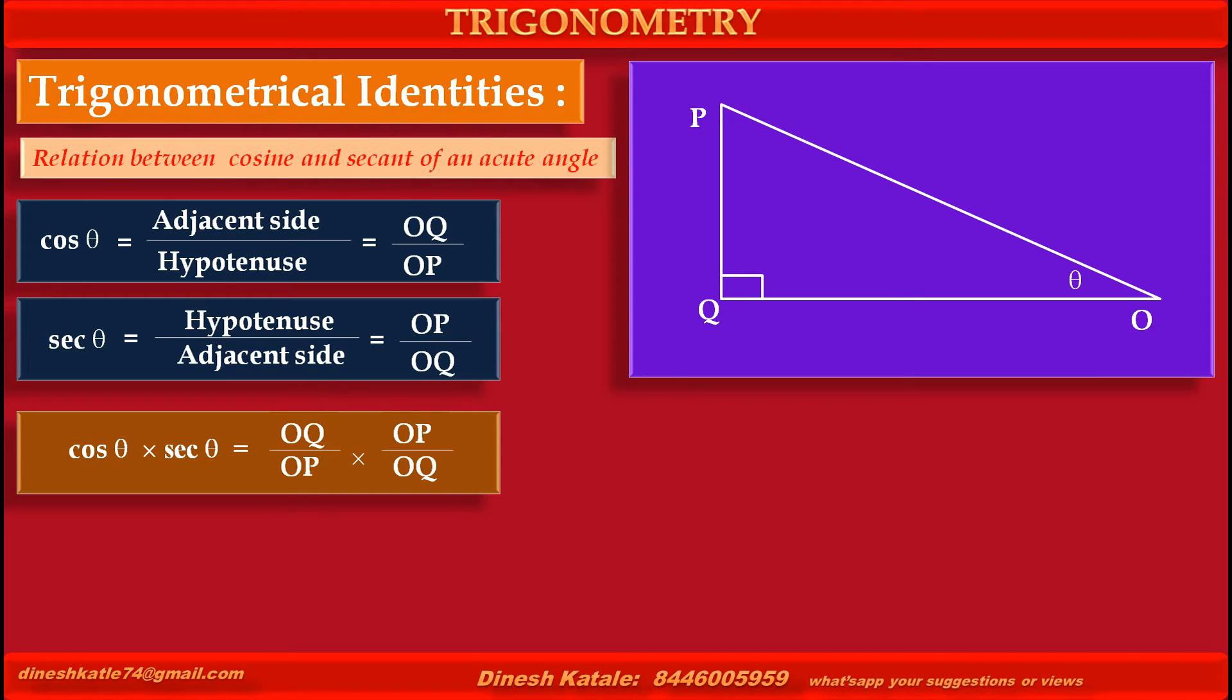Dividing OQ from numerator and denominator and dividing by OP from numerator and denominator, we get cos theta into sec theta equals 1.